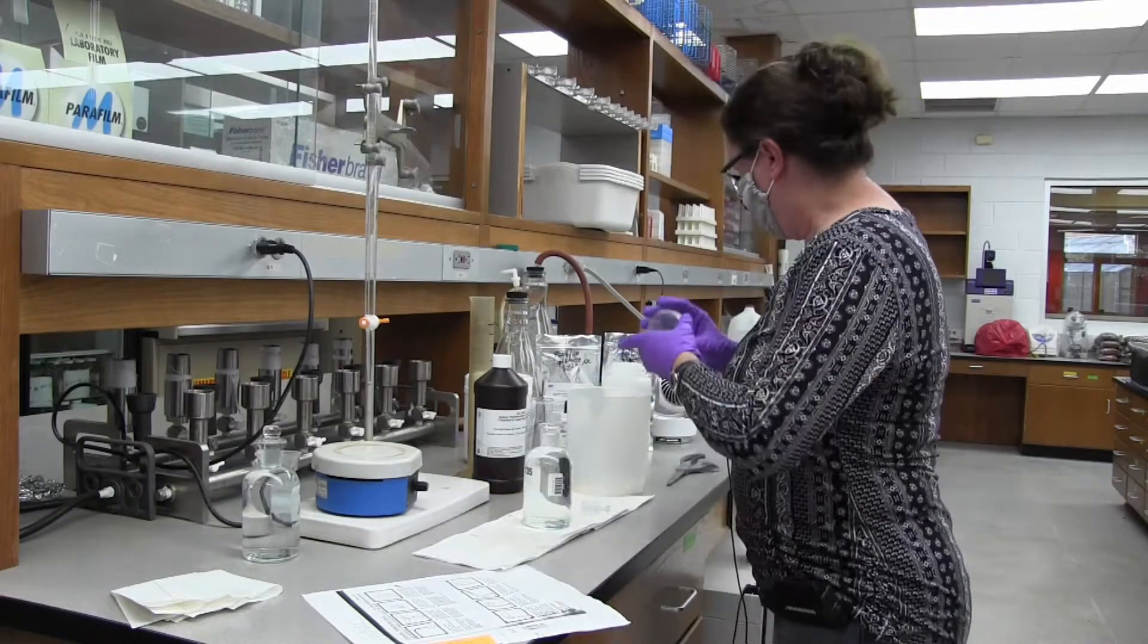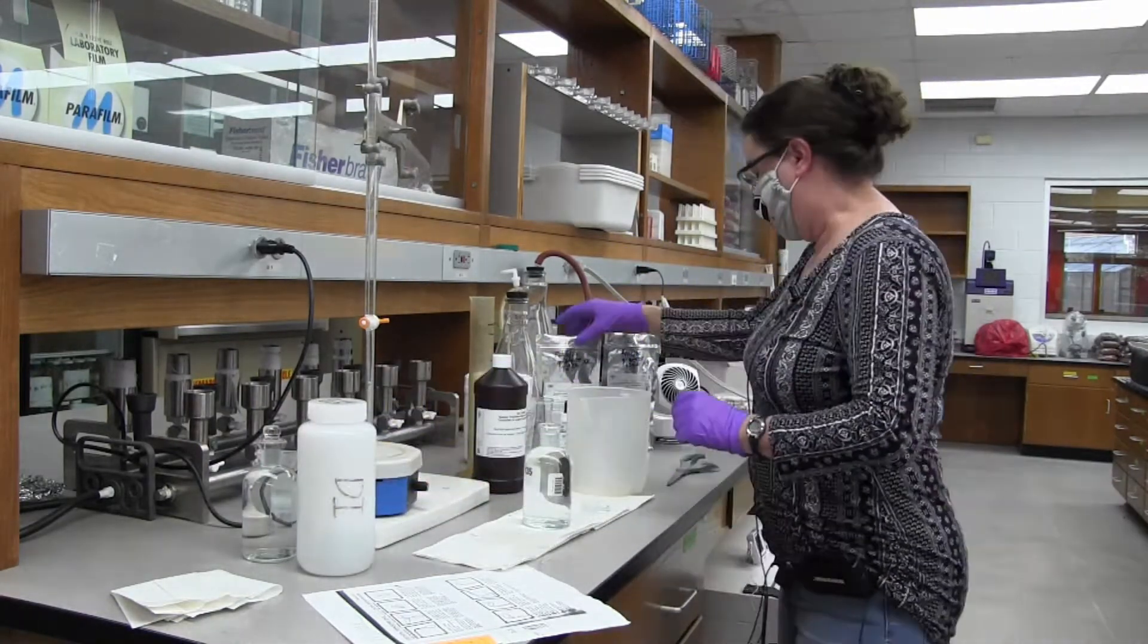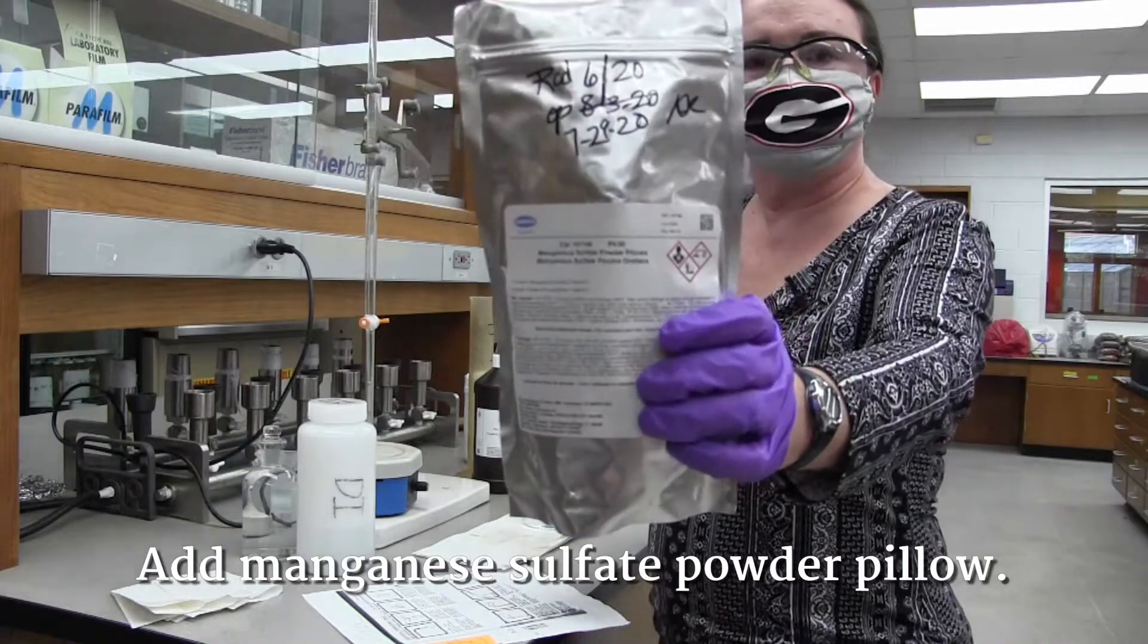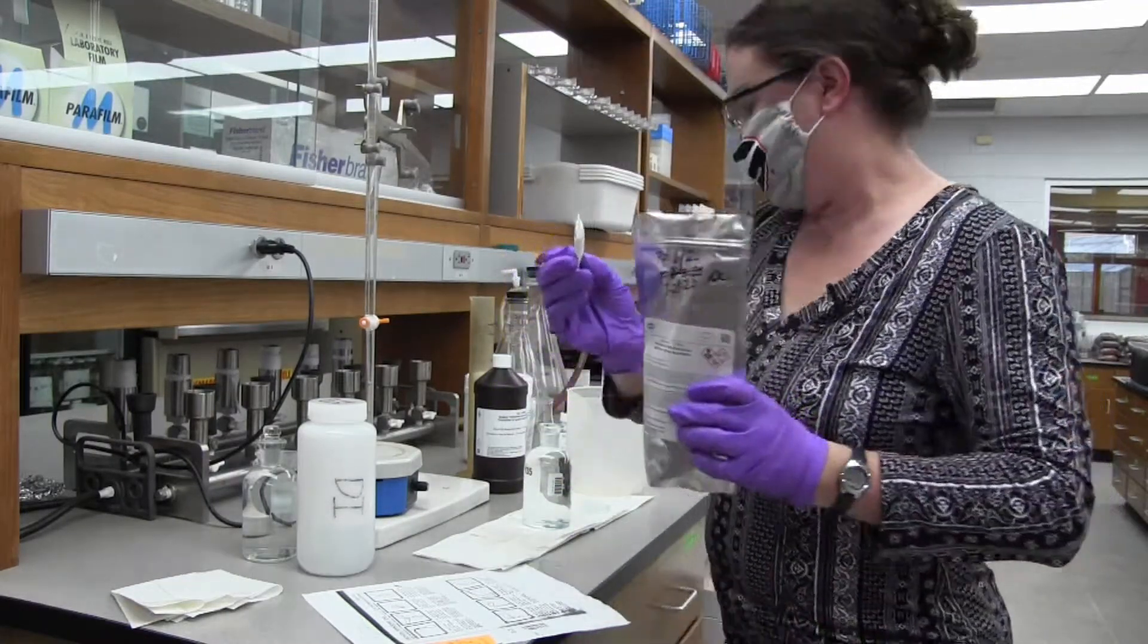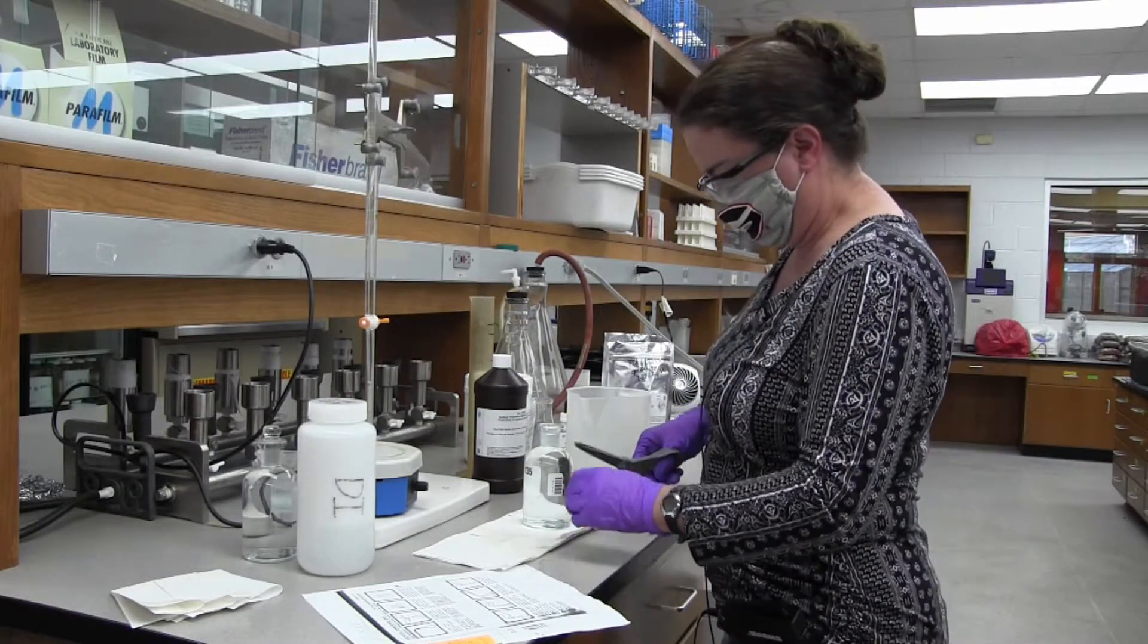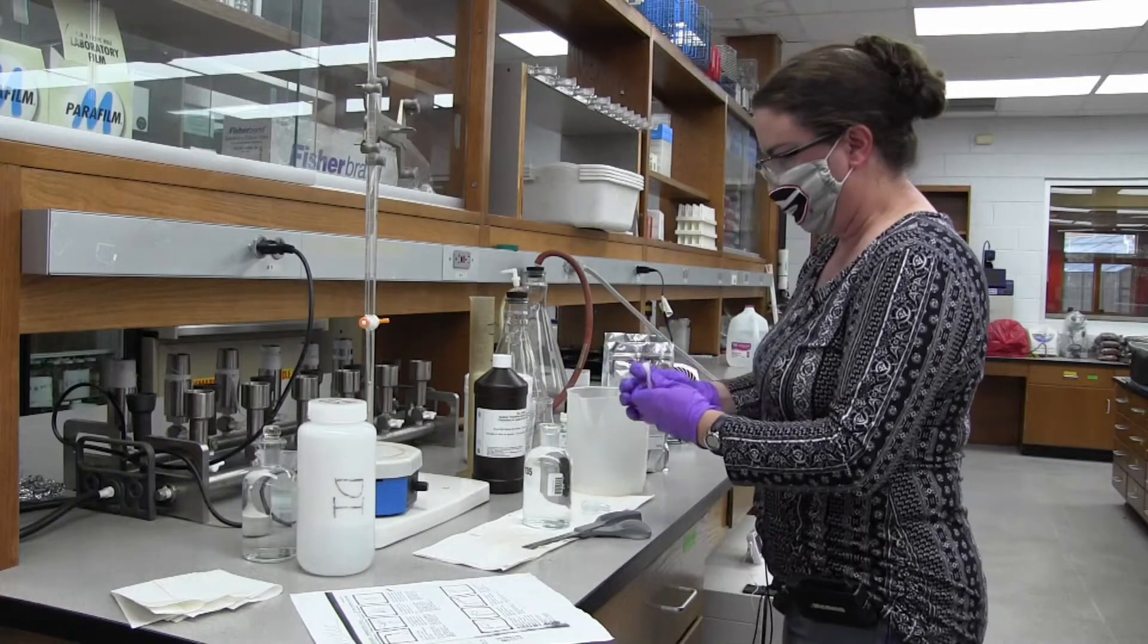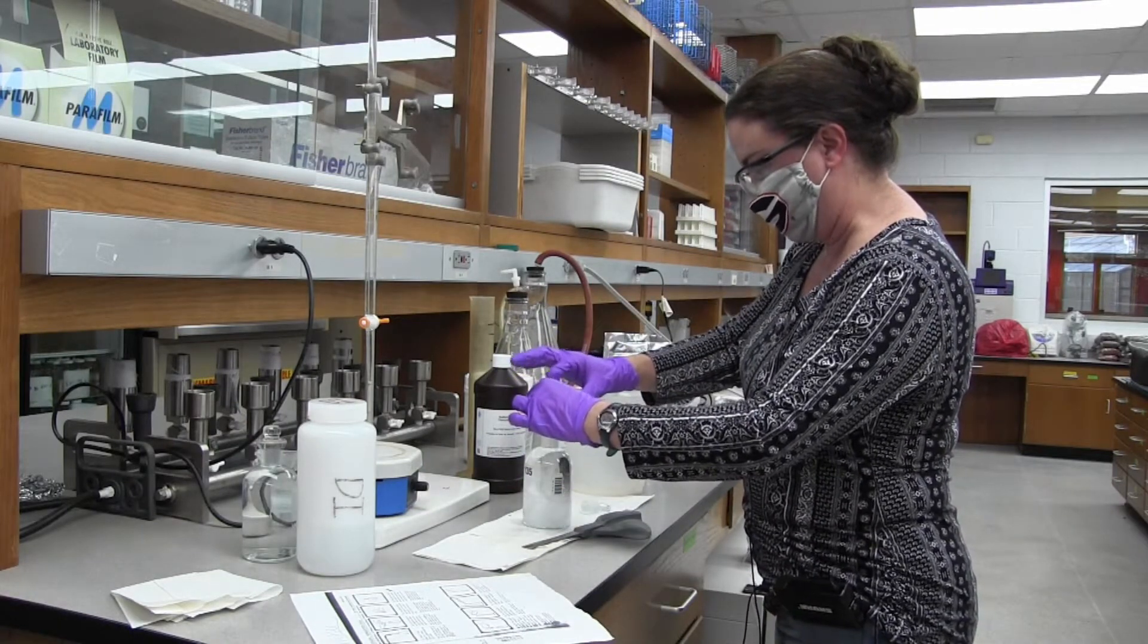And to the one we're going to be using for the titration, we're going to add the contents of a manganese sulfate powder pillow. You can use scissors to open it. You may have to tap the side if there's some left in there.